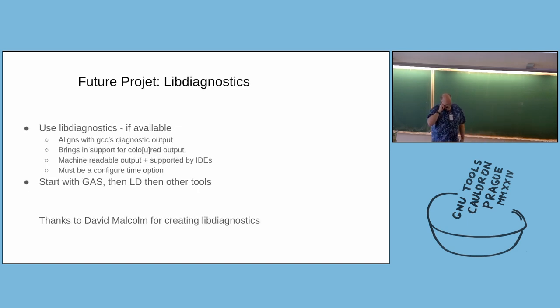David is implementing this wonderful LibDiagnostics library that can emit output with colored text. And a real benefit, I think, is it can generate machine-readable output. So you can then have linker error messages that can be read by the VS Code IDE and similar tools. David's going to do a quick demo.